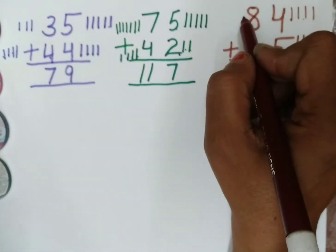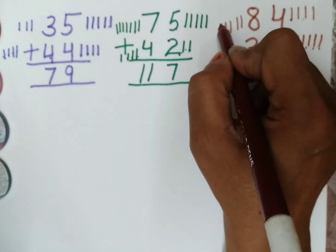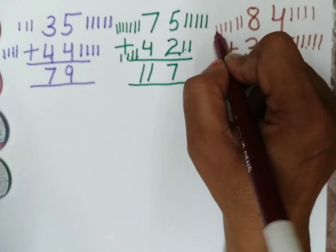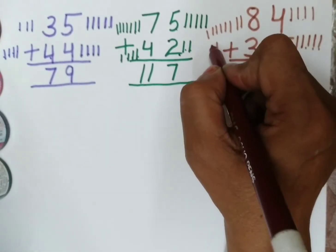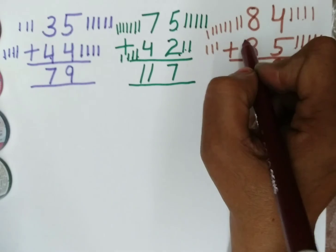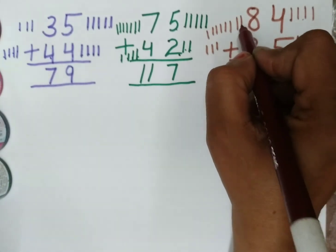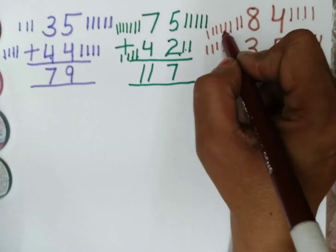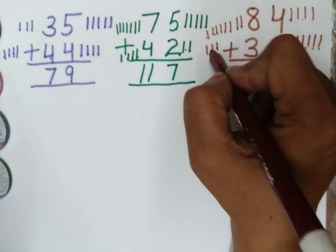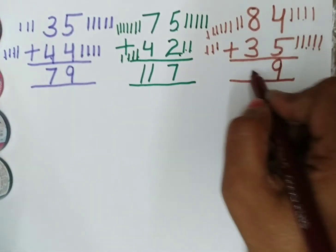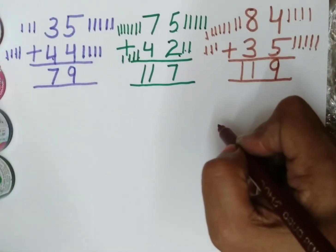Now what is this? This is 8: 1, 2, 3, 4, 5, 6, 7 and 8. And what is this? This is 3: 1, 2 and 3. Now we will count all these together: 1, 2, 3, 4, 5, 6, 7, 8, 9, 10, 11. I hope you understand. Thanks for watching. Mimak Academy.